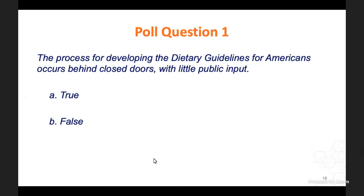Poll question: The process for developing the Dietary Guidelines for Americans occurs behind closed doors with very little public input. True or false? With 96% answering false—and that's correct. As mentioned, this was a very open process for people to provide input throughout, from the very beginning until final comments, even on the final report.